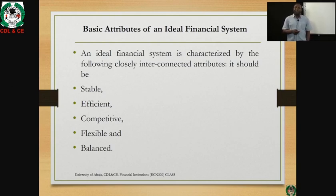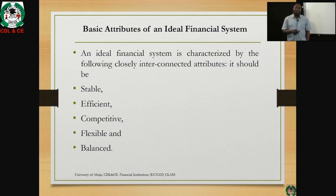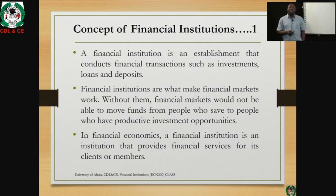The fourth attribute is flexibility — in terms of service delivery in loans and other aspects. One of the critical advantages of flexibility is enhanced financial inclusion for economic development and industrial growth. The last attribute is balance. Financial institutions must be balanced in terms of what they do and what they need to do, maintaining a balanced service delivery approach.